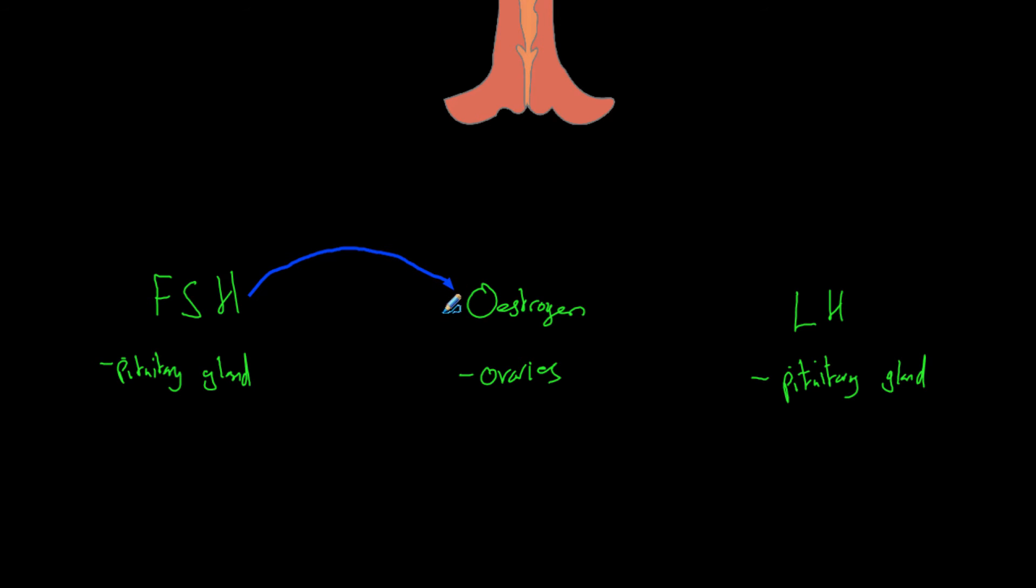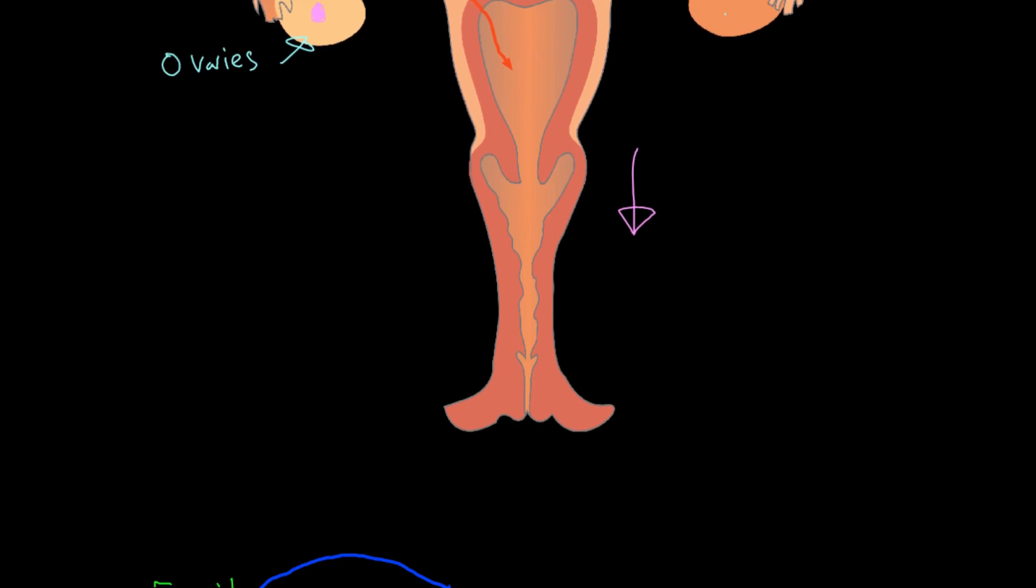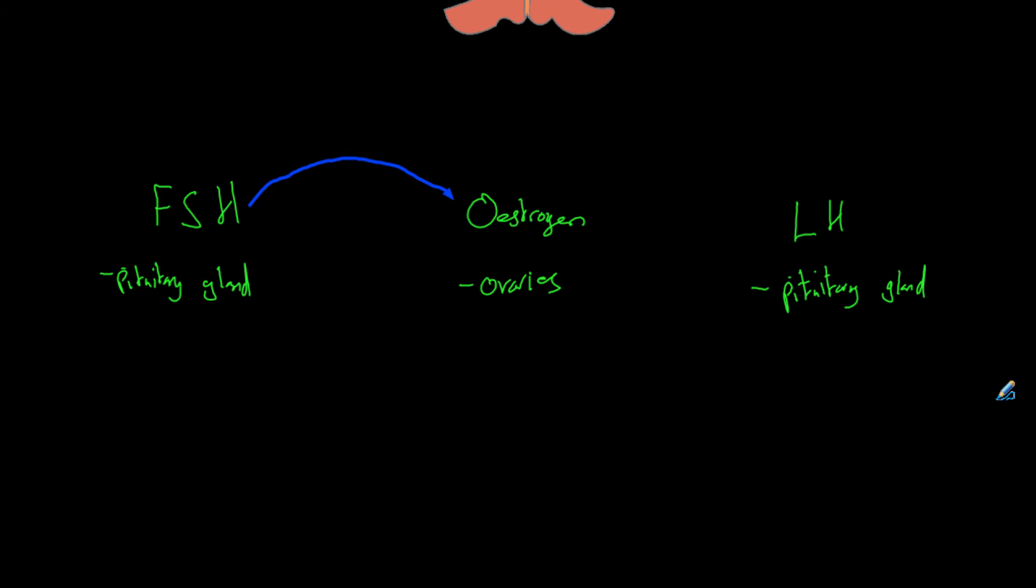So FSH causes oestrogen to be produced. Now remember we needed to thicken the womb lining, and we needed to do that before the 14 days when we get the egg released. Well that is what oestrogen does. So FSH from day one allows oestrogen to be produced. After a little while, oestrogen is present in the blood and it will cause the womb lining to thicken.